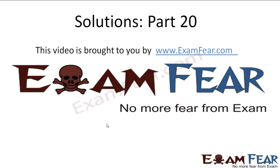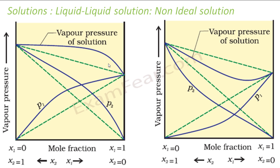This video on solutions part 20 is brought to you by examfia.com. As mentioned, a non-ideal solution does not obey Raoult's Law over the entire range of concentration — 'over entire range of concentration' is a critical phrase. A solution that does not obey Raoult's Law over the entire range of concentration is a non-ideal solution.